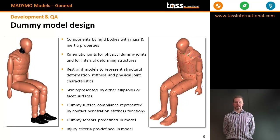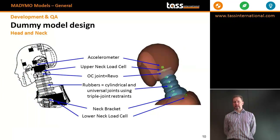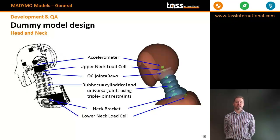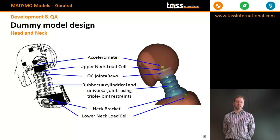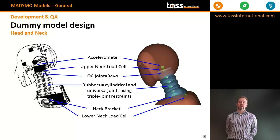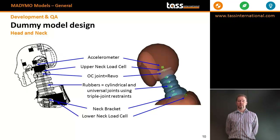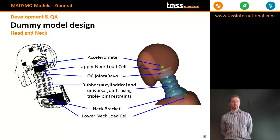The dummy sensors are predefined in the model and correspond exactly to the location of the hardware sensors. Injury criteria for all standard test protocols are also predefined. Taking the Hybrid 3 as an example, accelerometers are defined by requesting output from the location of the accelerometer in the hardware, and load cells are defined by requesting the output of joint constraints. The occipital condyle joint is modelled as a revolute joint — effectively a hinge — while the rubber neck is defined using triple joint restraints that effectively model short beam theory.